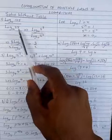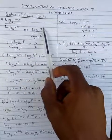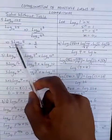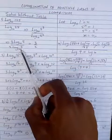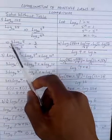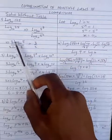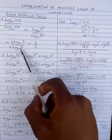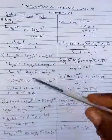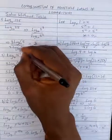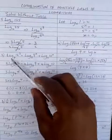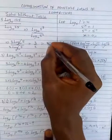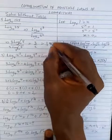Having found that, we apply the power law, which states that the power multiplies the log. So we now have log 5 base 10 in both numerator and denominator. The numerator becomes 3 times log 5 base 10, and the denominator becomes 2 times log 5 base 10. Calling log 5 base 10 as x, x cancels x, leaving us with 3 over 2. Converting the improper fraction: 3 over 2 is 1 remainder 1, which gives us 1 and a half.